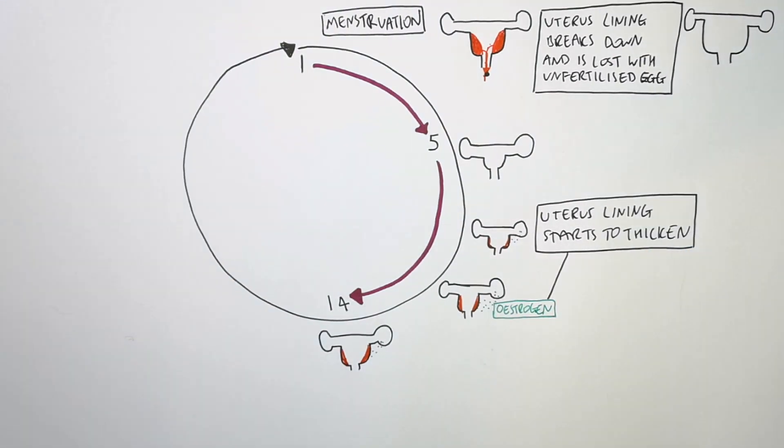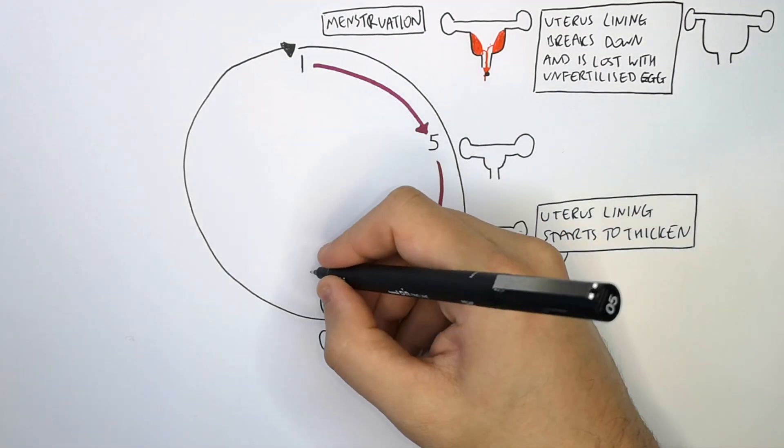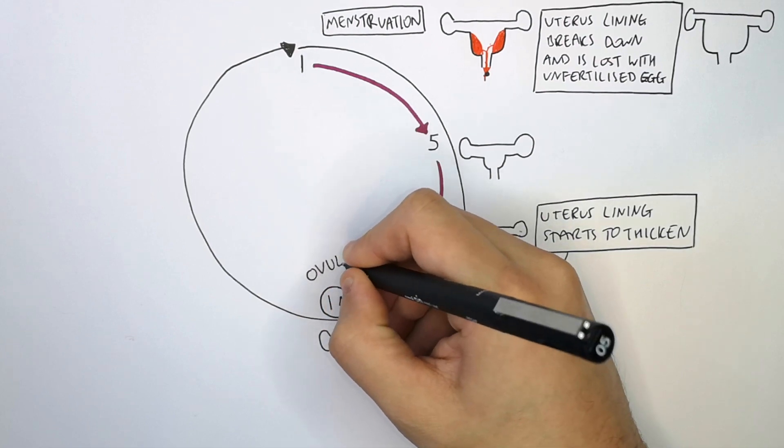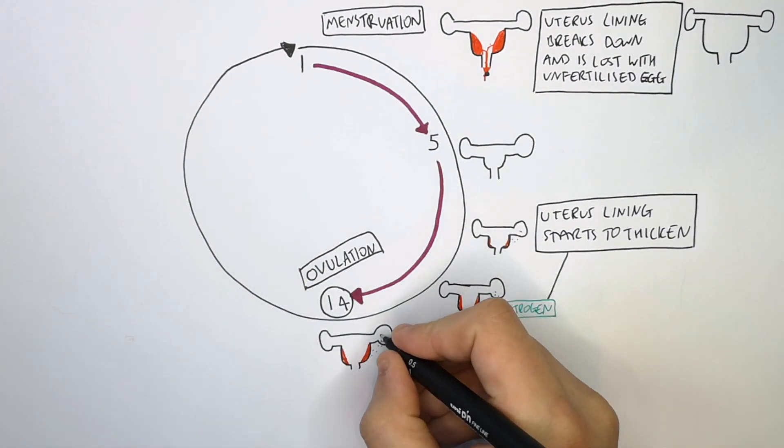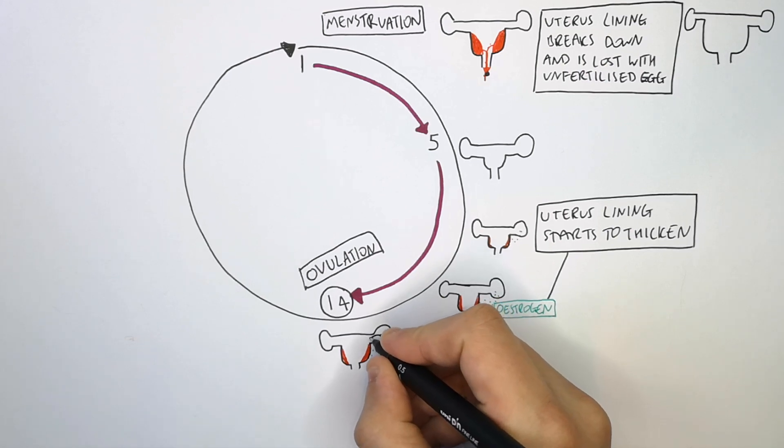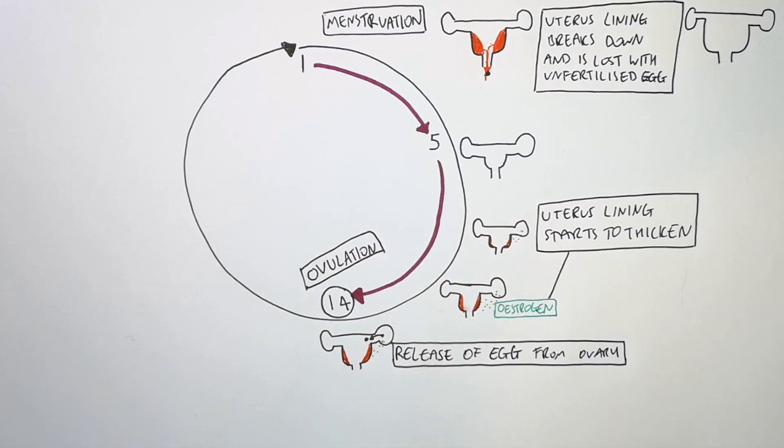When the uterus lining is thick enough and it's now about day 14, the next process happens which is ovulation. On day 14, ovulation happens. This is a release of an egg from the ovary into the oviduct.